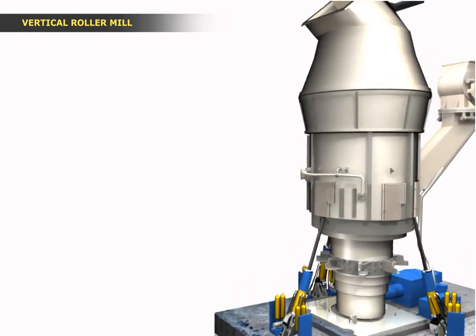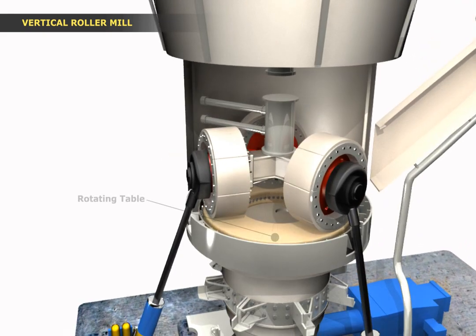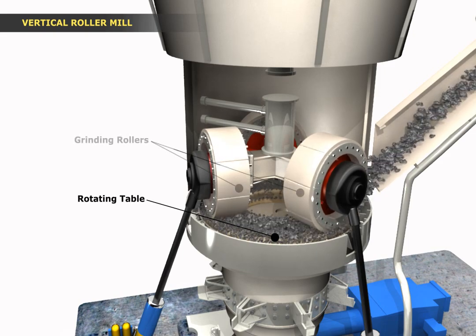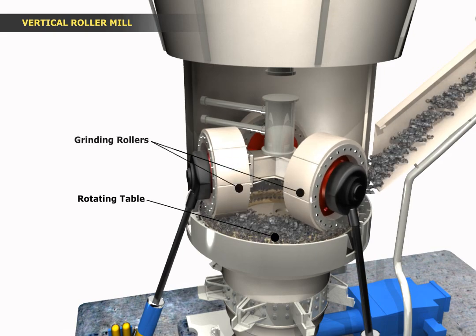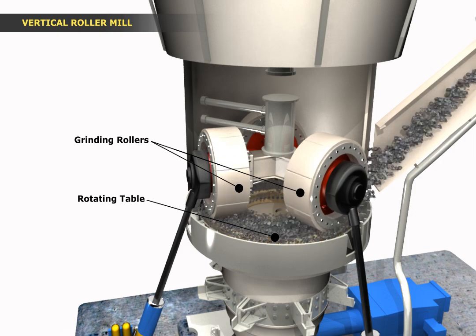You'll learn how the mill feed is fed onto a rotating table where pressure generated between the rollers and table crushes and grinds the raw feed.